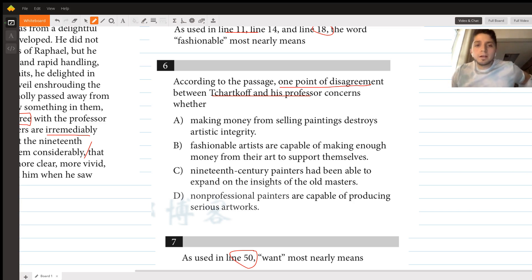We don't have strong enough evidence. It seems true that probably the professor would think that making money would destroy artistic integrity, and maybe Tcharkoff thinks so as well, although he's kind of questioning it the whole way. The end point is that we just don't know for sure and there's no text for this, so we can get rid of that one.